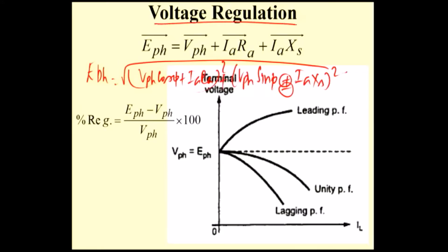Voltage regulation in a synchronous generator — the terminal voltage is supposed to be constant, whatever may be the load from zero load to full load. We are expecting that the terminal voltage should not decrease, but in practice the terminal voltage is decreasing.